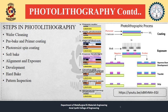After the photoresist is no longer needed, it must be removed from the substrate. This usually requires a liquid resist stripper which chemically alters the resist so that it no longer adheres to the substrate. Alternatively, the photoresist may be removed by a plasma containing oxygen, which oxidizes it — a process called ashing, which resembles dry etching. The use of 1-methyl-2-pyrrolidone (NMP) solvent for photoresist removal is another method; when the resist has dissolved, the solvent can be removed by heating to 80 degrees Celsius without leaving residue.